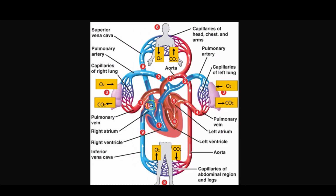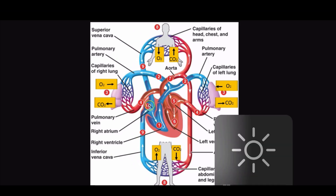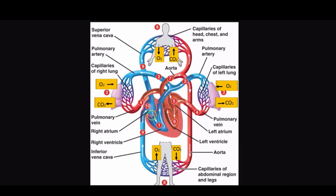Deoxygenated blood enters the right atrium through the superior vena cava and the inferior vena cava. Once in the right atrium, it passes through the tricuspid valve into the right ventricle. From the right ventricle, it passes through the pulmonic valve into the pulmonary artery, which bifurcates into the right pulmonary artery and the left pulmonary artery. The pulmonary arteries carry the blood to the right lung and the left lung, where simple diffusion occurs to get rid of CO2 and bring oxygen into the blood vessels.